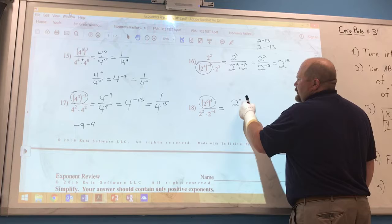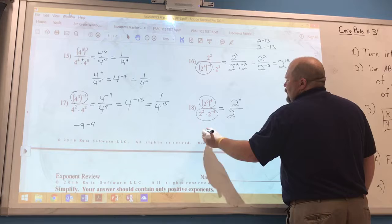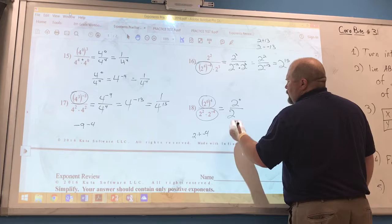Down here on the bottom we can simplify this. We are multiplying like bases. So we add the exponents. So that's going to be 2 and when we add 2 plus a negative 4, that's going to give us a negative 2.